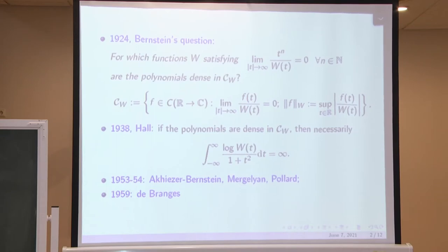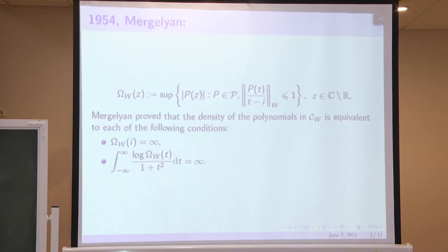And we introduce the space C_W, which consists of the functions which are continuous on the real line, such that our weight then down at infinity, and introduce such a seminorm, which is the supremum over the real numbers of the modulus of the ratio of f and our weight function W. And the question of Bernstein is when the polynomials are dense in this space C_W. Below is a short history of the question. In 1938, Hall proved that necessity of such a condition that logarithmic integral of the weight diverges. This condition is known to be not sufficient condition. And later sufficient and necessary conditions were found in 1953-54 by Ahiezer, Bernstein, Mergelyan, Pollard, and later in 1959 by de Branges.